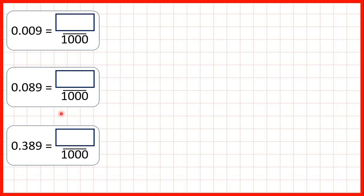Now let's take a closer look at some of these questions. We saw that 0.009 is 9 thousandths because the third digit after the decimal point is the thousandths digit and all of our other place values show zero.